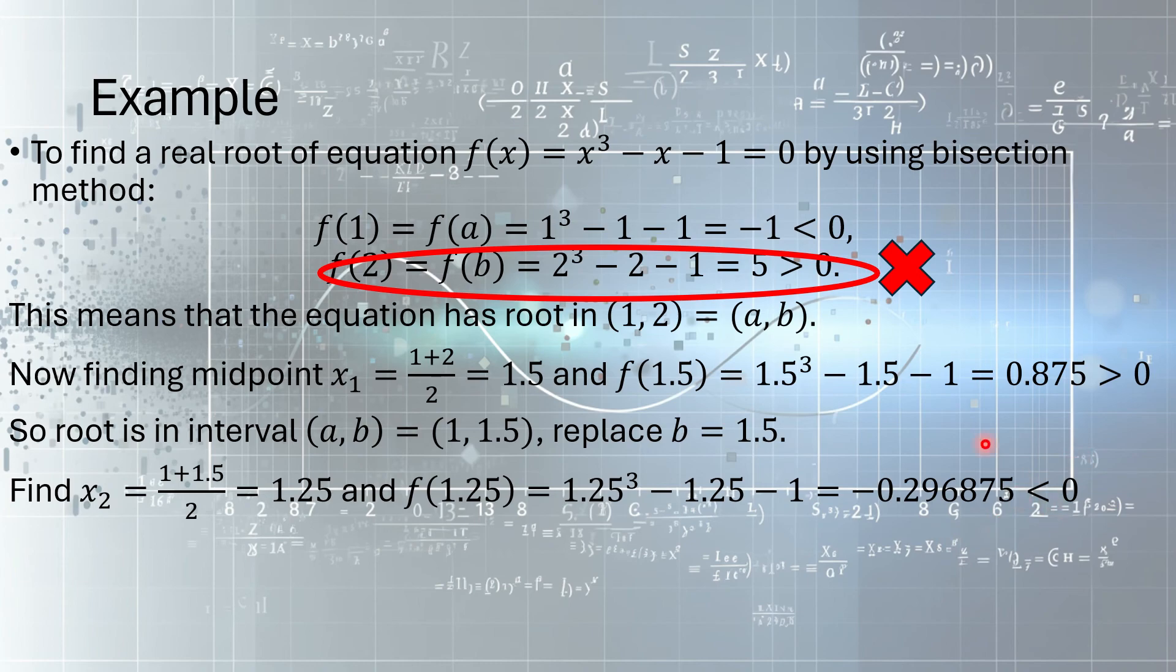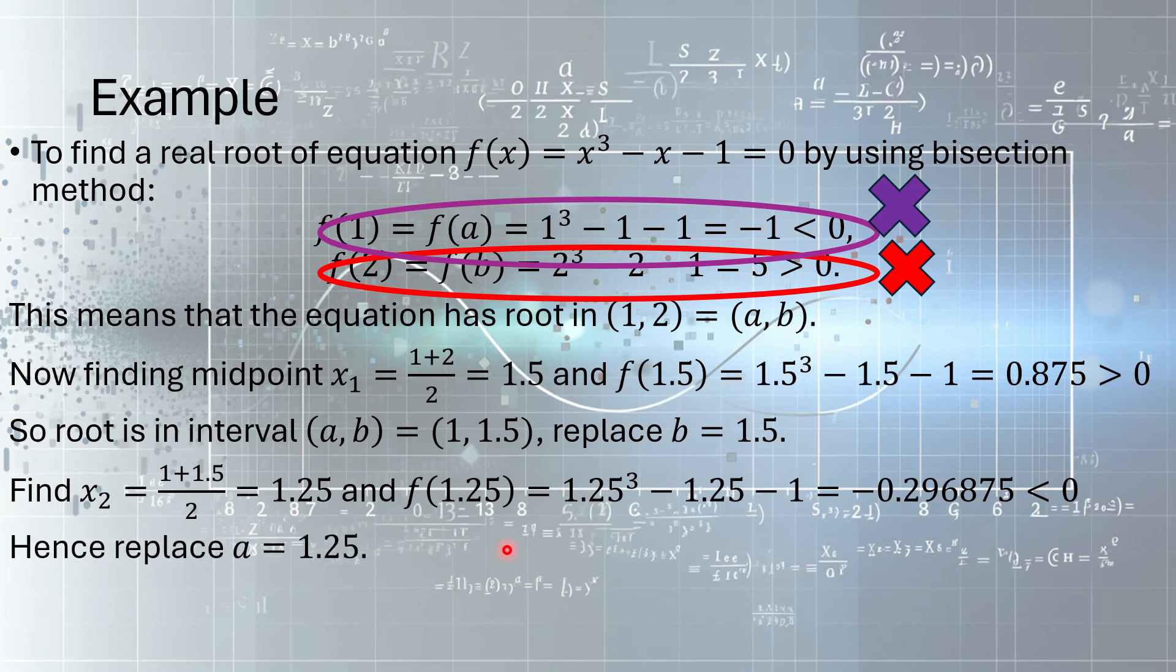Now, this is negative. We have this is positive, this is negative, this is positive. So what we'll do in this case, now we'll be dropping the previous negative value, which was -1. It means now the root is between 1.5 and 1.25. The root will be in the interval 1.25 to 1.5. And in a similar way, we can find x₃, then checking its sign, x₄, x₅. That's the method we use.